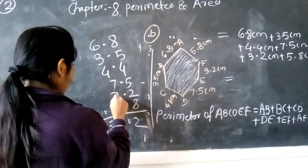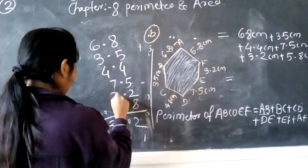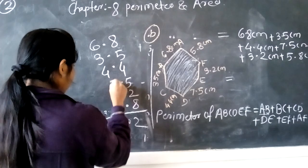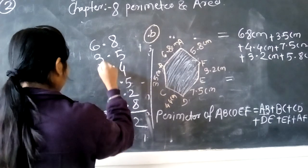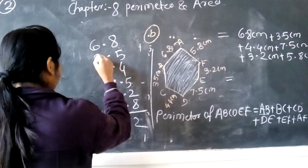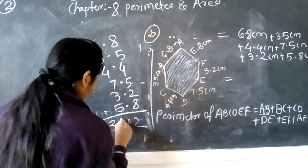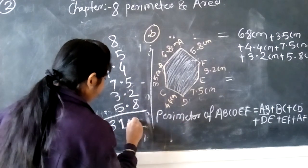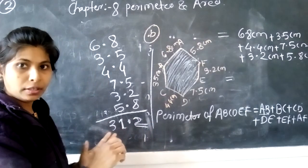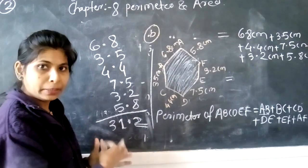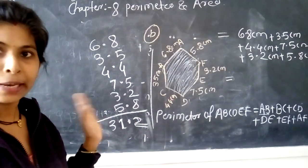And now the decimals: 5 plus 3 is 8, 8 plus 7 is 15, 15 plus 4 is 19, 20, 21, 22, and last 6 is 3. This is the answer, 35.2. Okay students, did you understand? Now we solved the pentagon one.